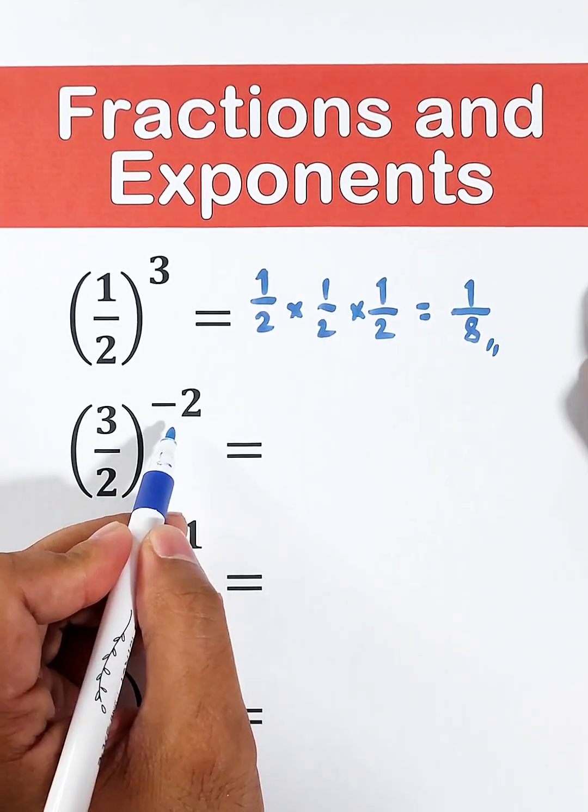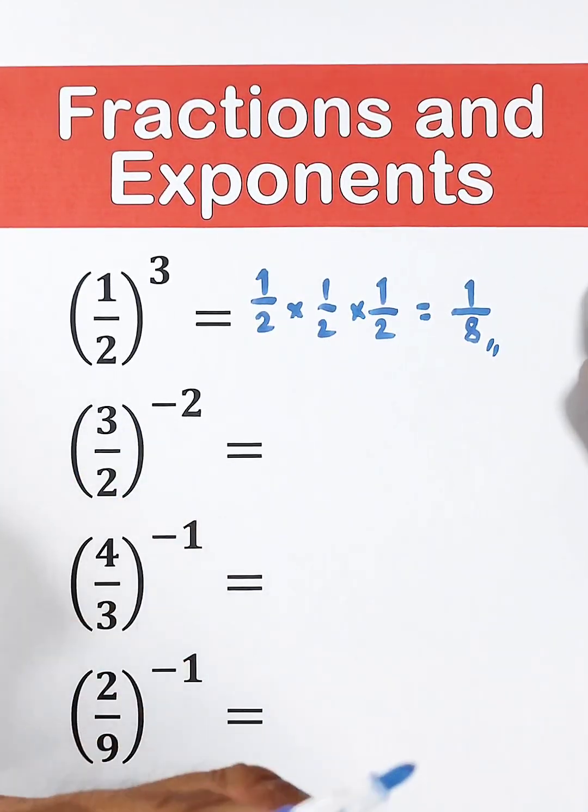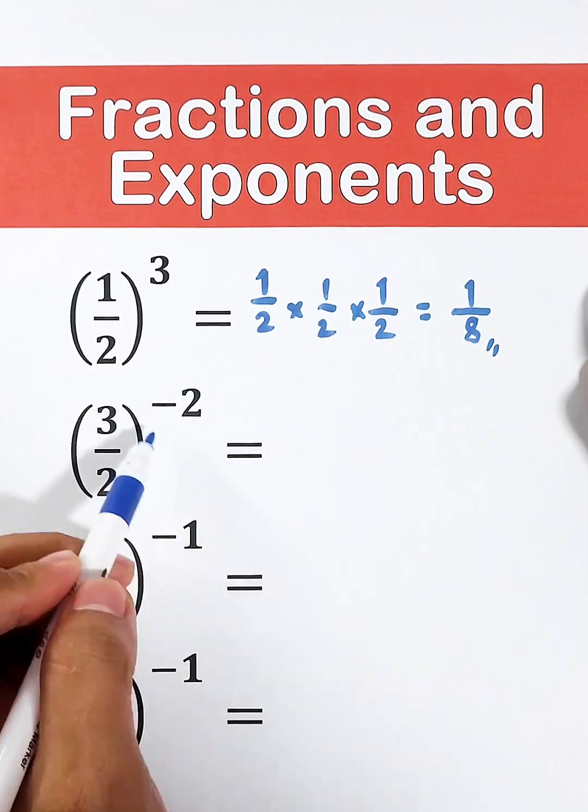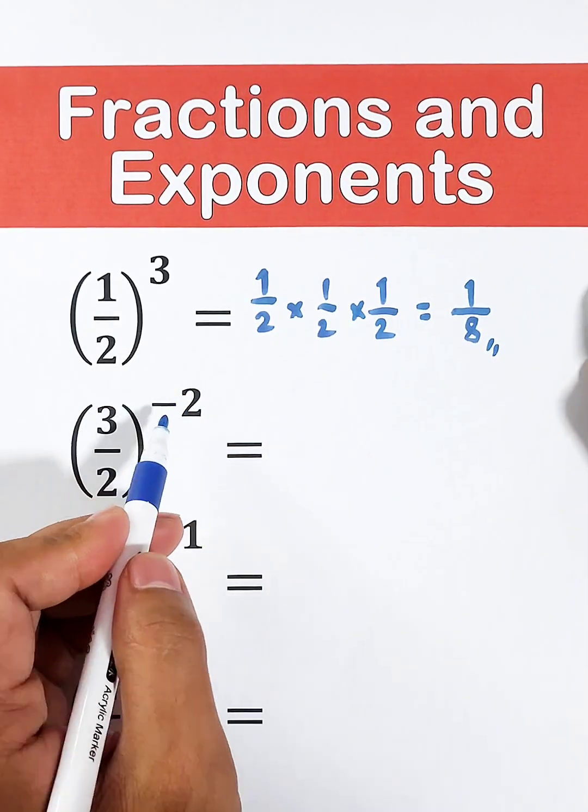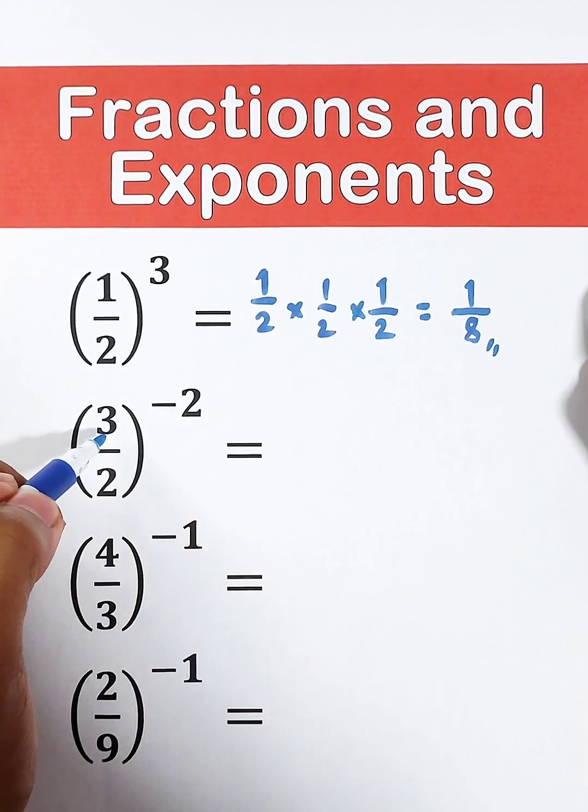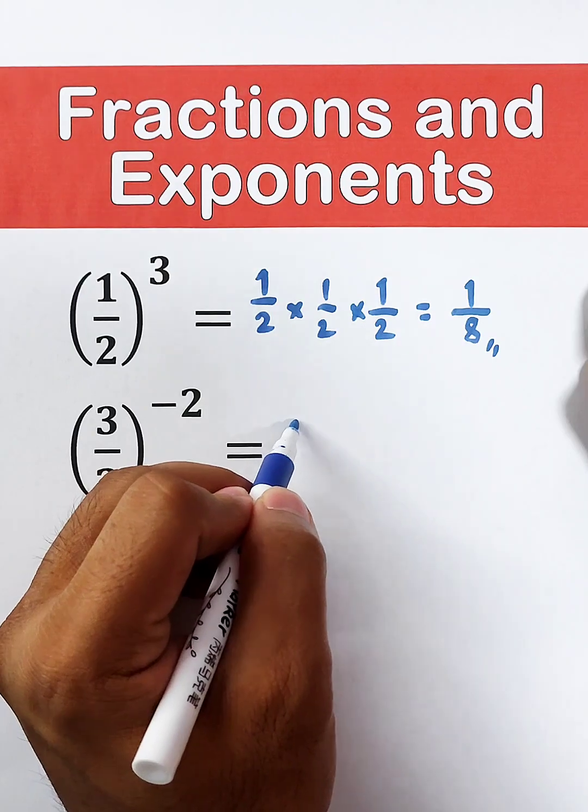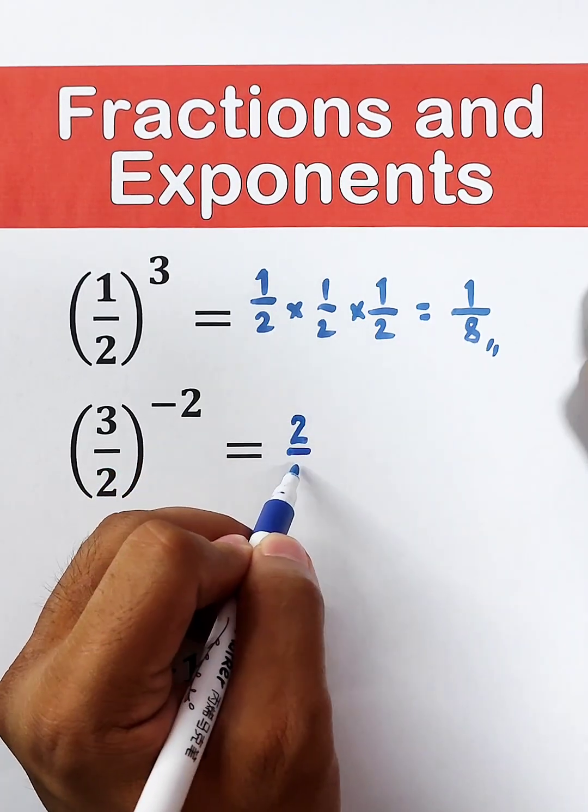We have 3 over 2 which is raised by negative 2. So the rule here is, before we simplify this, we need to make this exponent positive. So to make negative 2 positive, we will get the reciprocal of 3 over 2, and that is 2 over 3.